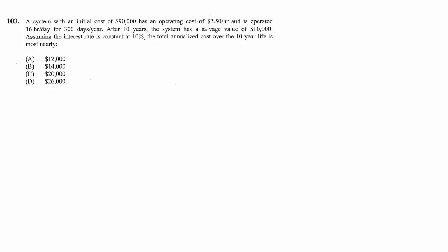Problem 103: A system with an initial cost of $90,000 has an operating cost of $2.50 an hour and is operated 16 hours a day for 300 days per year. After 10 years, the system has a salvage value of $10,000. Assuming the interest rate is constant at 10%, the total annualized cost over the 10-year life is most nearly what?